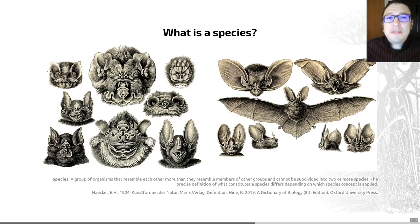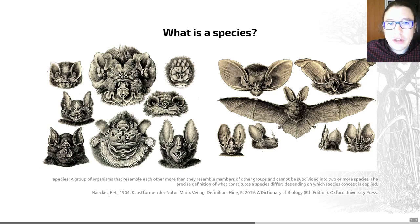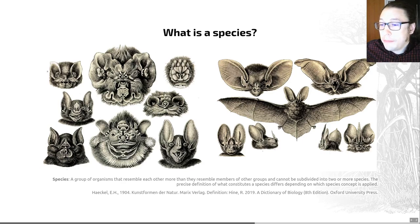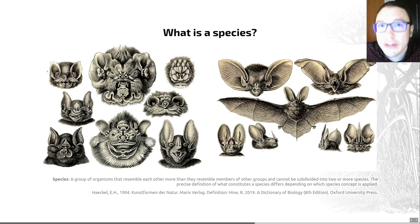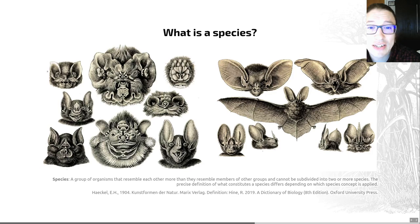Now, given the importance of this concept, it must be easy to define, right? Nah, mate. That's really difficult. I've tried to put a definition on this slide, and I found the broadest definition that I could. This dictionary definition suggests that a species is a group of organisms that resemble each other more than they resemble members of other groups, and a species cannot be subdivided into two or more species. Note that that's a recursive definition — it's a definition for the word 'species' that includes the word 'species' in it. That's generally fairly bad, and it reflects the fact that it's really difficult to pin down what a species is, so the definition has to remain very, very vague.